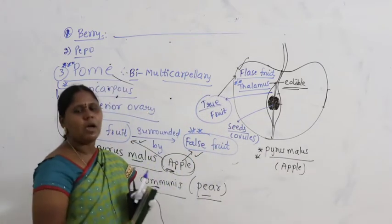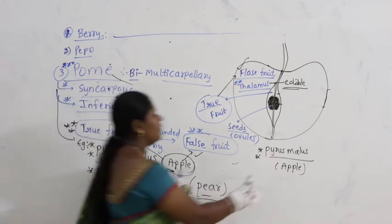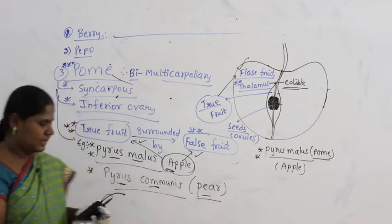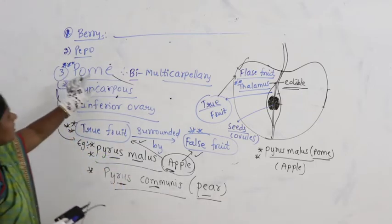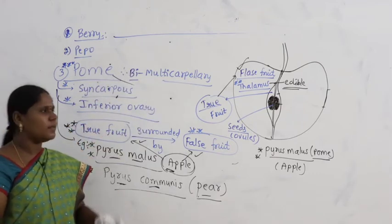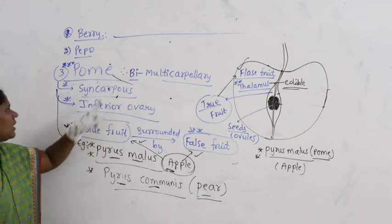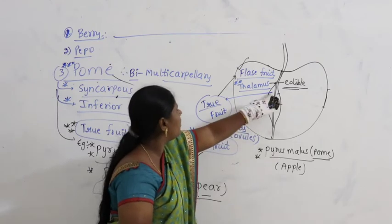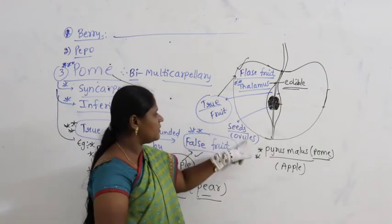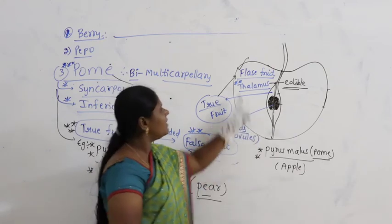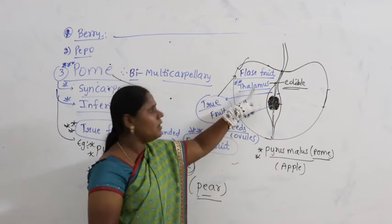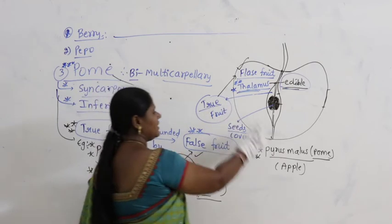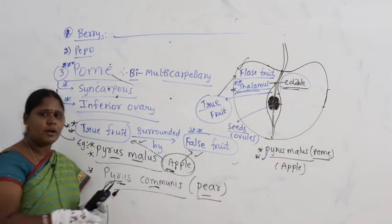Pyrus malus is the scientific name for apple. The type of fruit in apple is pome. Pome is bi- to multicarpellary, syncarpus, inferior ovary. The true fruit is in the center — that is the ovary with seeds — surrounded by the false fruit. The edible white fleshy part is thalamus, which is the false fruit.